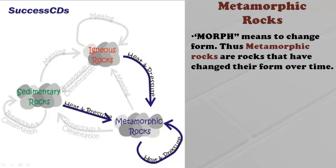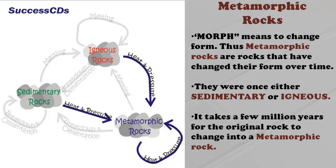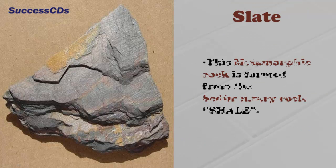Morph means to change form. Thus metamorphic rocks are rocks that have changed their form over time — they were once either sedimentary or igneous. It takes a few million years for the original rock to change into metamorphic rock. Slate is a metamorphic rock which is formed from the sedimentary rock shale.